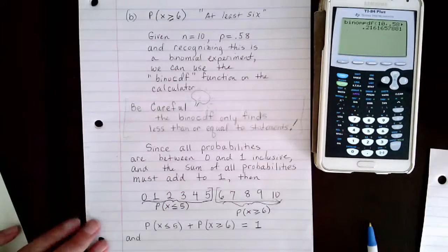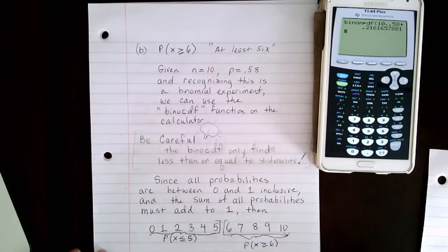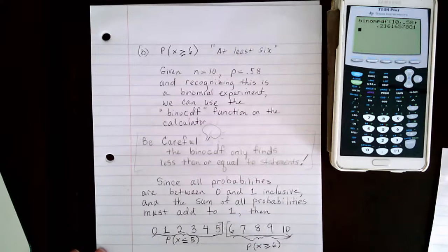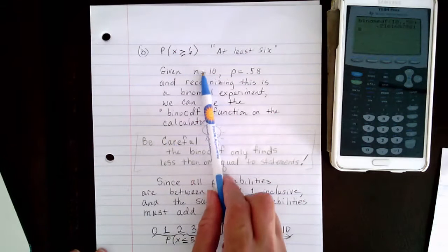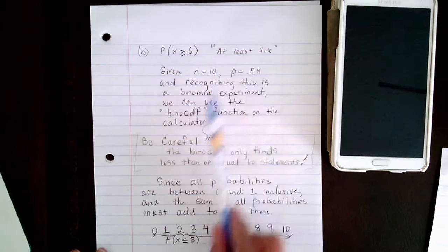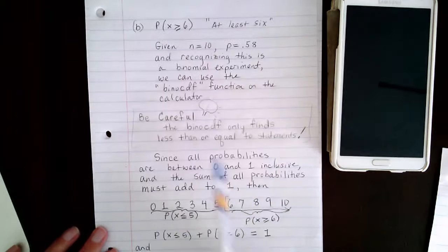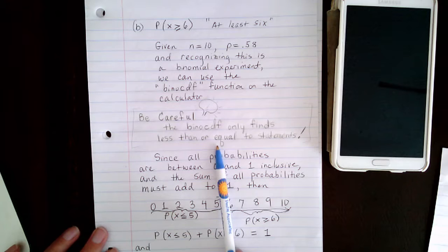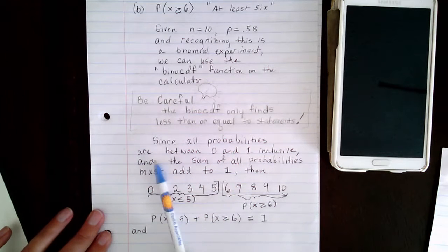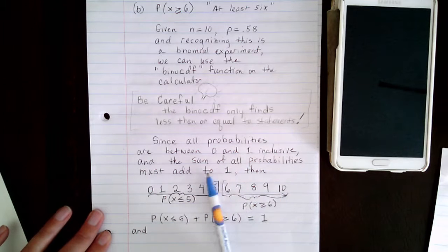Part B wants to know the probability of getting at least 6 of the 10 men answering that they are professional baseball fans. The number of trials is 10 and the probability of success is 0.58. We recognize this is a binomial experiment. On this one, we have to be careful because the CDF function will only find less than or equal to statements, so we're going to use the concept of the complement. All probabilities are between 0 and 1, and the sum of all probabilities must add to 1.